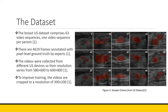The breast ultrasound dataset they created comprises 63 video sequences, with one video sequence obtained from each patient. There are a total of 4,619 frames annotated with pixel-level ground truth by experts. The videos were collected from different ultrasound devices, so the image resolution varied. To counteract this, the authors cropped all videos to a smaller resolution to make the training process easier.